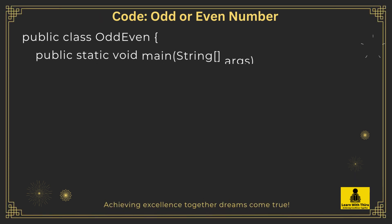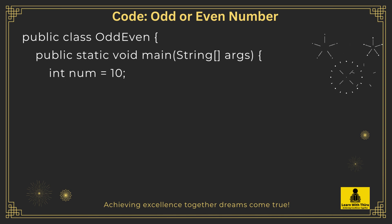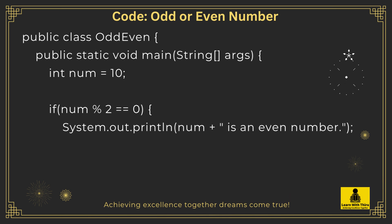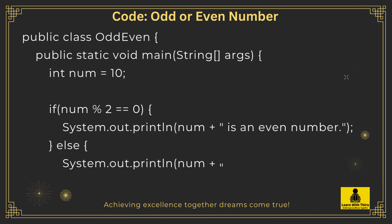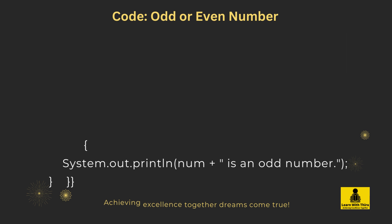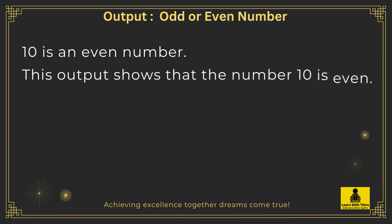Code: odd or even number. Public class OddEven, public static void main, String args, int num equals 10. If num % 2 equals equals zero, System.out.println num plus is an even number. Output: odd or even number — 10 is an even number. This output shows that the number 10 is even.